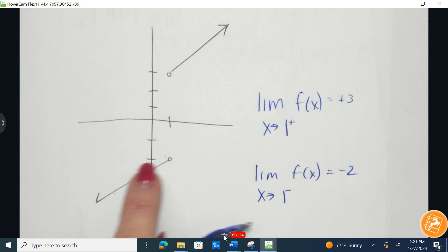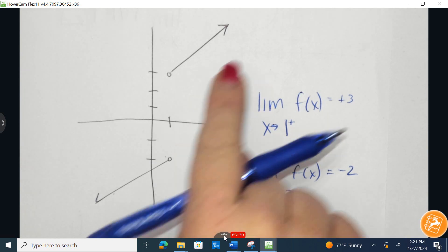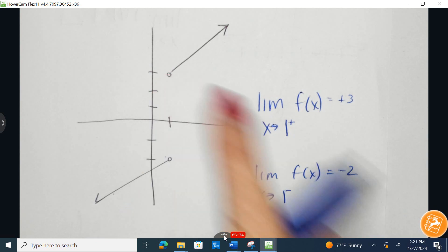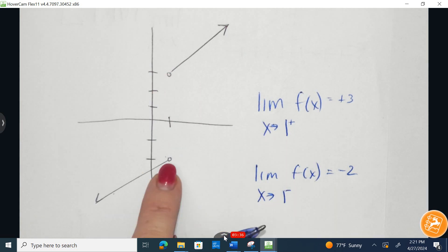and the y value would be approaching negative 2 as x - as x, sorry, I should say as x approaches 1 from the right, the y value would be approaching an output value of 3. And as x approaches 1 from the left-hand side, you'd be approaching a y value of negative 2.